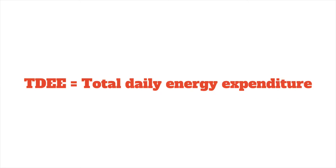Your TDEE describes your total daily energy expenditure, which is the number of calories that your body burns in one day. It is calculated by estimating how many calories you burn while resting, called the basal metabolic rate, or BMR, and adding a certain number of calories on top, depending on how often you exercise.